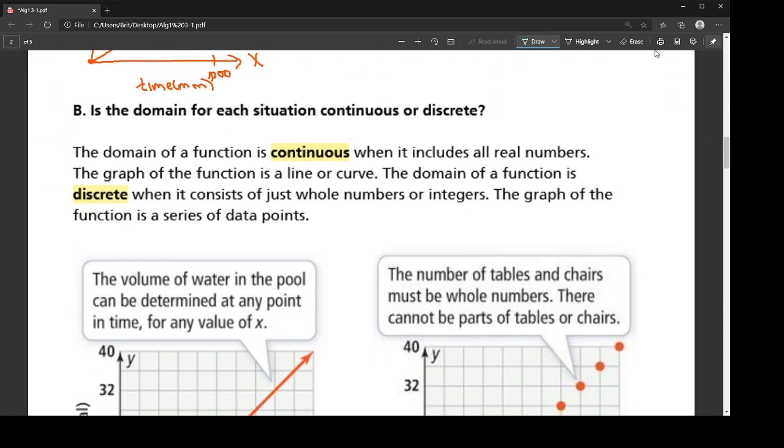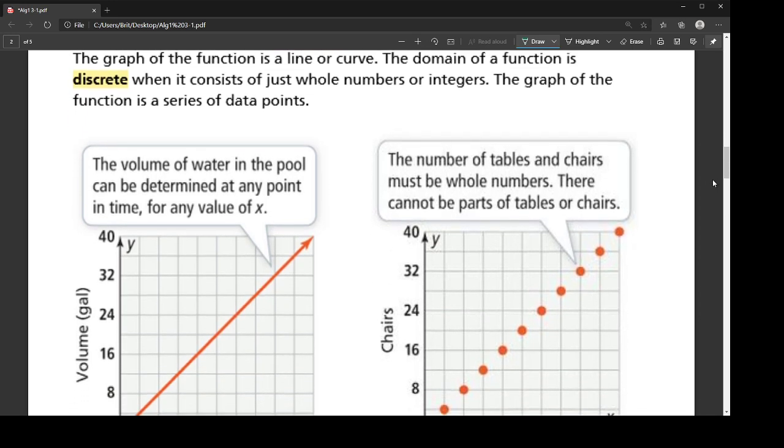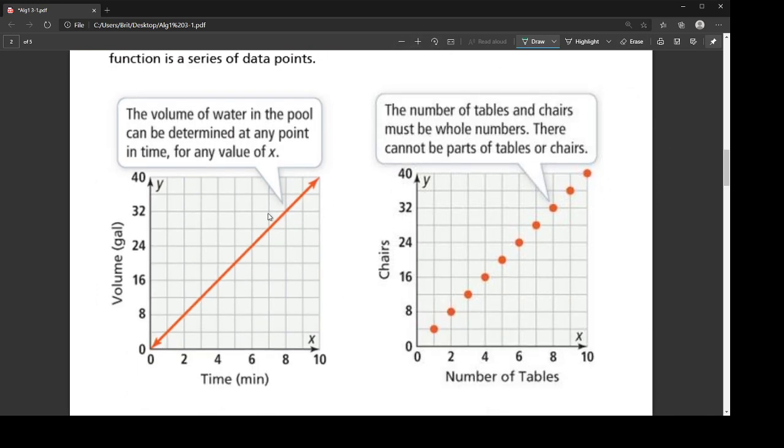So this brings up the idea of continuous versus discrete. So a domain of a function is continuous when it includes all of the real numbers. So if I'm just going to zoom out a little on these graphs. So this is the example with the swimming pool. Remember how we drew the nice smooth graph? Now, at any point in time with filling that swimming pool, I could say, it's been 547 minutes. What's the volume of the pool? I can have an exact moment of time, any moment of time in the filling of this pool, and I can calculate the volume. That's the idea of continuous.